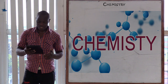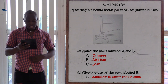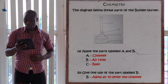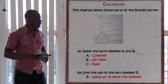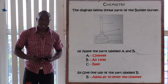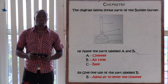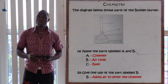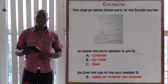The first question is asking: the diagram below shows parts of the Bunsen burner. That's the diagram whereby we have three parts that have been labeled. The first question is asking to name the parts labeled A and B. So as you can see in the diagram, we have part A and part B.